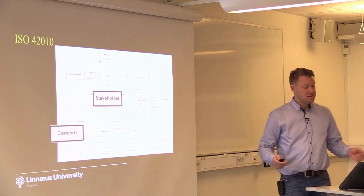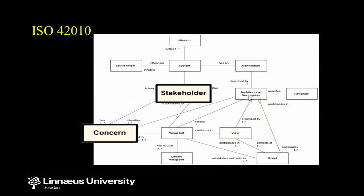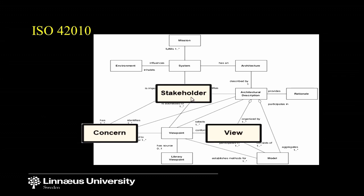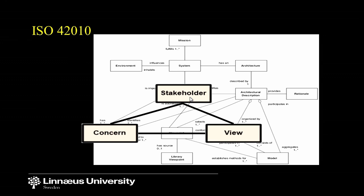Besides the stakeholder and the concern, there is a third concept: the view. There will be a functionality view that describes the functionality concern for whatever stakeholders are interested in system functionality. There will be a performance view describing how the system deals with performance for the stakeholders interested in this. This is a system that is flexible with respect to the system you're working with, because reliability is not a concern for all systems and deadlock is not a concern for all systems.